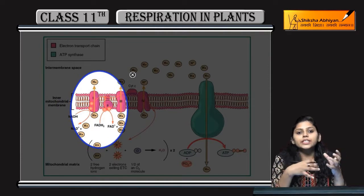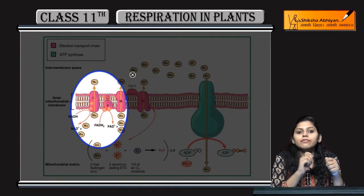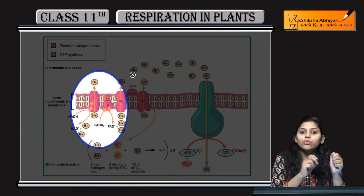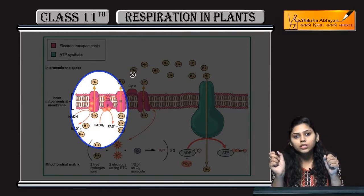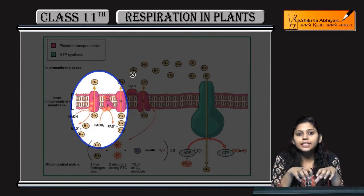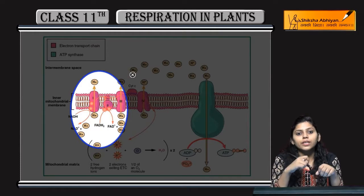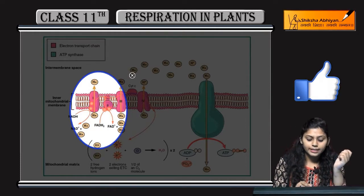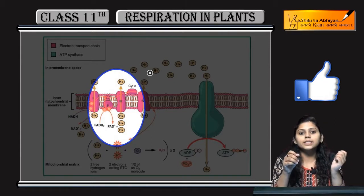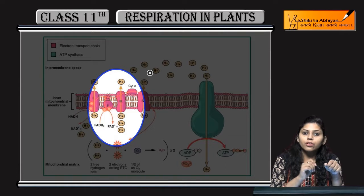From the TCA cycle, the succinate step produces FADH2. That FADH2 gets oxidized — FADH2 becomes FAD+. That is why complex two is called the FADH complex. Electrons from here are passed on towards ubiquinone.